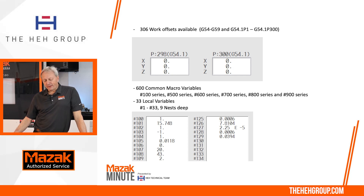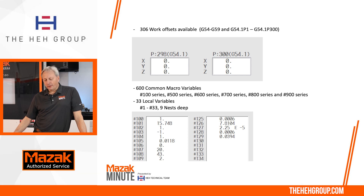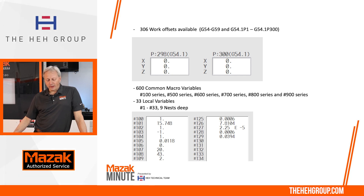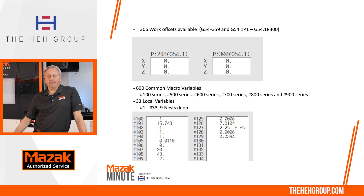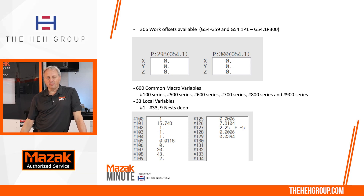For macro variables, we have 600 total to work with: the #100, 500, 600, 700, 800, and 900 series. There are also local variables — a total of 33, going 1 through 33 — and you can have them 9 nests deep. This is useful when you're in a sub-program doing macros; you can pass local variables from sub to sub.